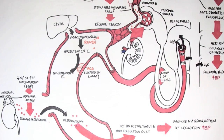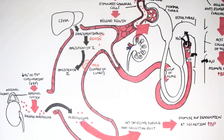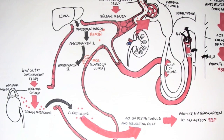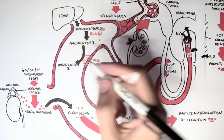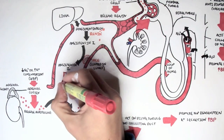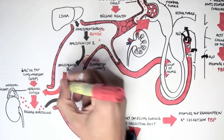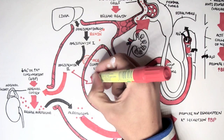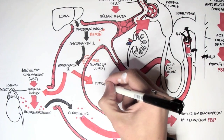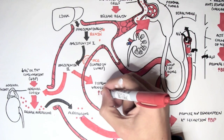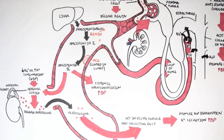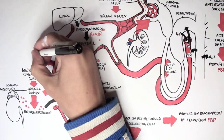Angiotensin II is a serious hormone that causes an increase in blood pressure. It targets many tissues, and whatever it targets, it will cause an increase in blood pressure. For example, angiotensin II stimulates the adrenal cortex to release aldosterone, which increases blood pressure. It also causes systemic vasoconstriction, increasing blood pressure. Additionally, it stimulates the thirst center in the brain, causing us to drink, increasing plasma volume, and therefore increasing blood pressure.